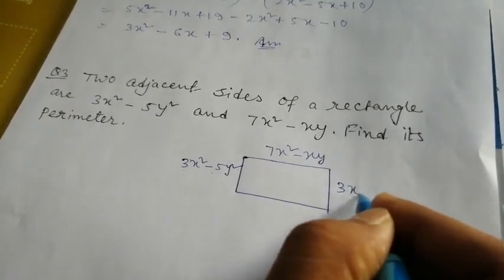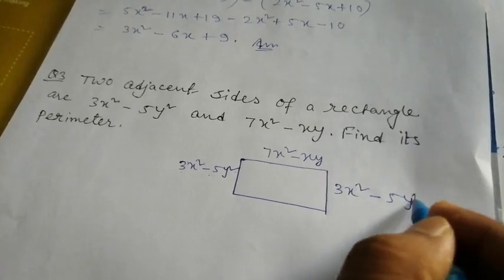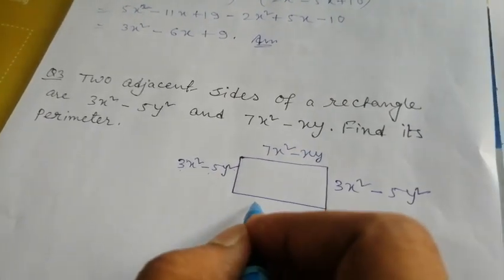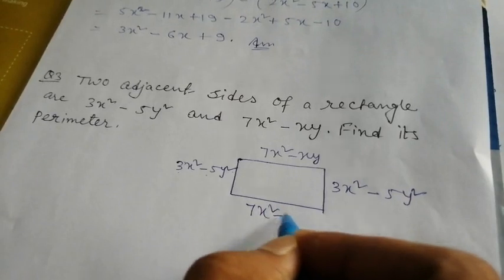So you can say 3x² - 5y² here. If this is 7x² - xy, this is also 7x² - xy on the opposite side.